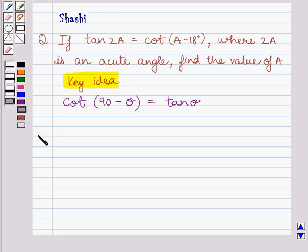Let us now start with the solution. We are given tan 2A is equal to cot(A - 18°). Now, we know 2A is an acute angle, and we also know that tan θ is equal to cot(90 - θ). Here, the value of θ is equal to 2A. So we can write tan 2A is equal to cot(90° - 2A).